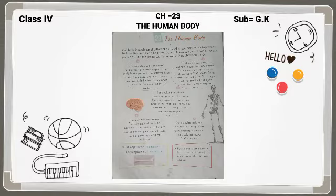The muscles move the bones at these joints. और हमारे जो मांसपेशियां होती हैं बच्चों, इन joints से ही काम करती हैं. Muscles move करती हैं, तो bones भी move होती हैं. जहां पर हड्डियों के मिलने का place होता है, बच्चों उसे हम joints कहते हैं.